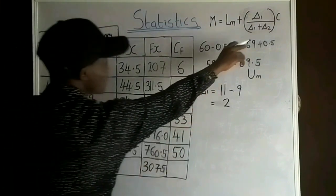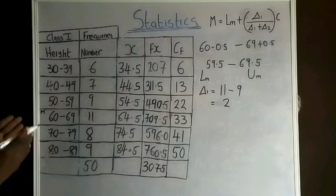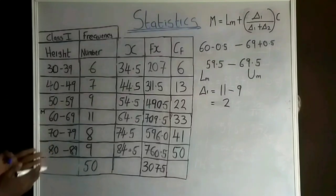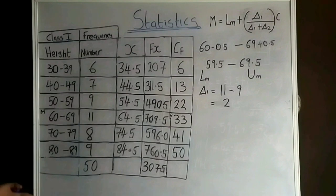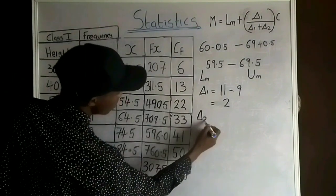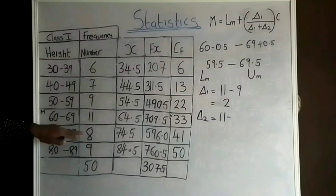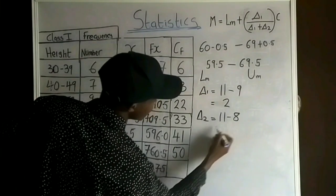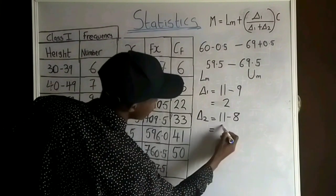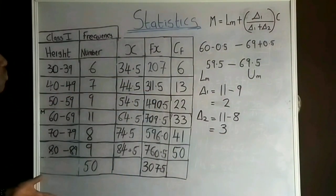δ₂ is the difference between the frequency of the modal class and the class after it: 11 − 8 = 3. So δ₂ = 3.